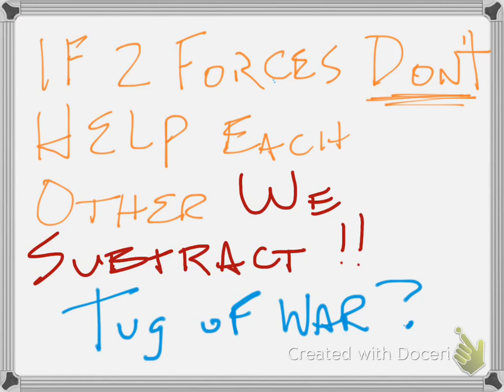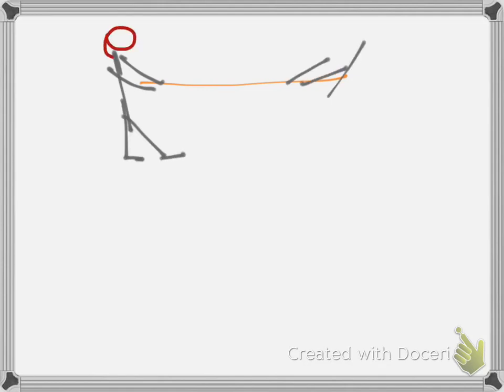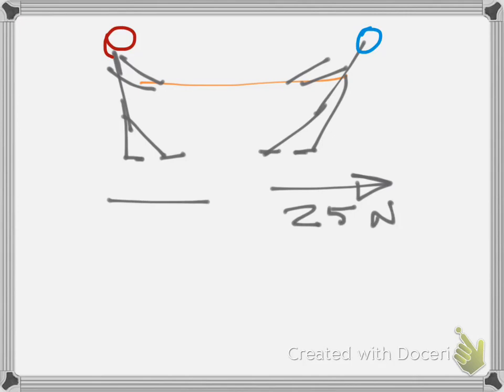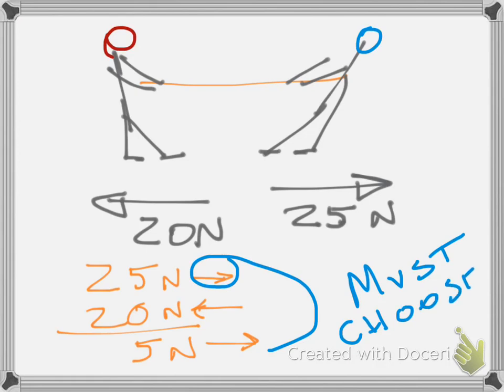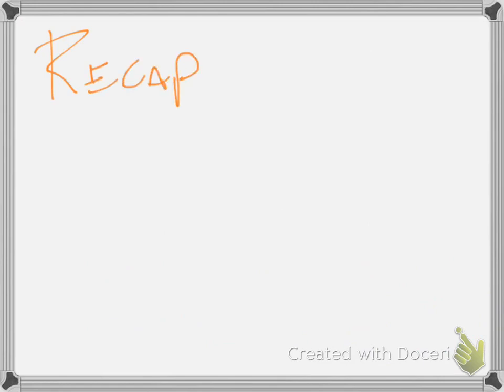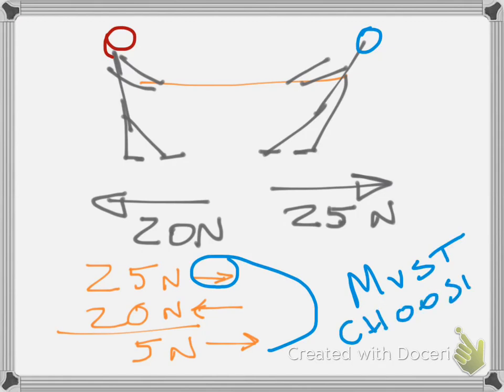And you guys remember that from elementary, right? Little kid school, tug of war, field day. Same thing. You're going to subtract these forces. Now I'm going to try to draw somebody here. And one person is going to pull with 25 newtons. And the other person is pulling with 20 newtons. So let's subtract these out. But make sure you draw your arrows just like we did to the left and to the right. You're going to subtract that and get 5 newtons. You must choose an arrow.